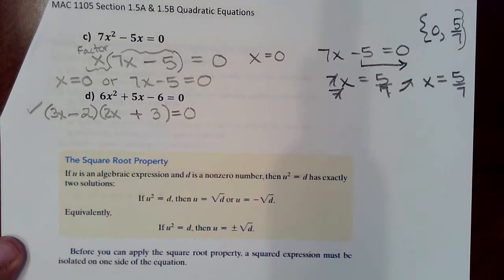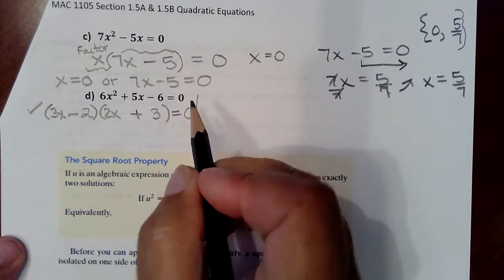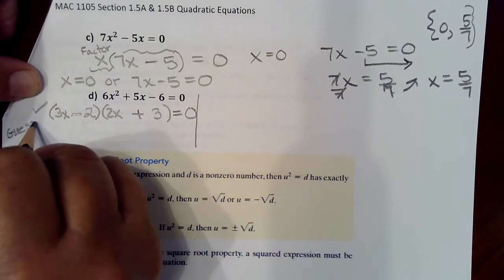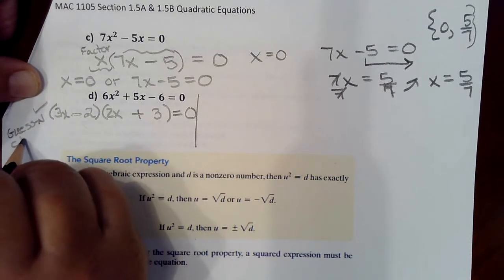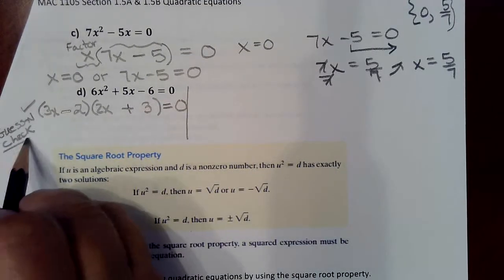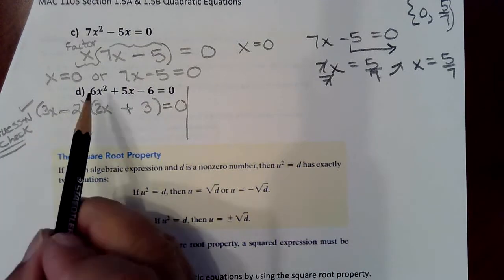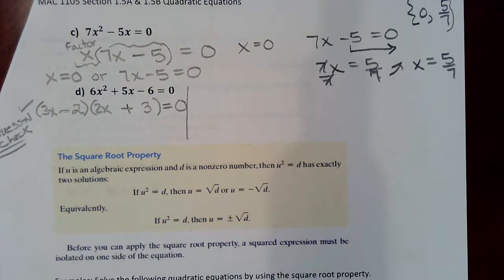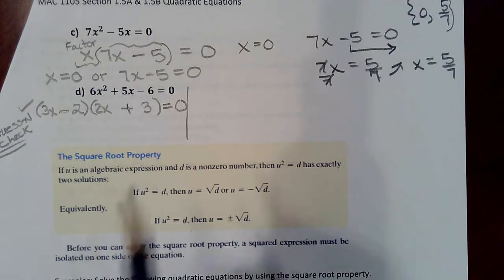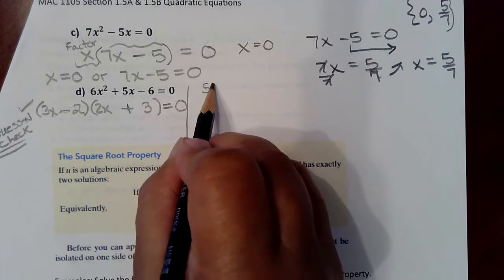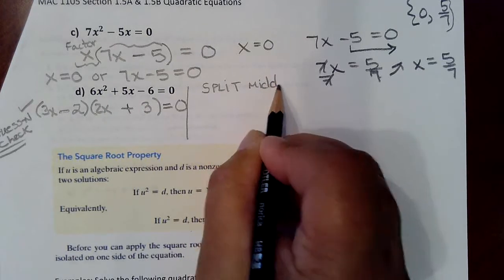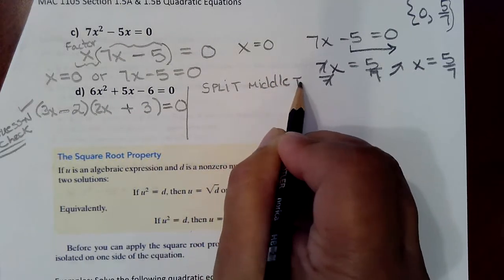If you decide that you like splitting the middle term, I'll demonstrate that way also because both of them are going to get you the same two factors. So this was guess and check where I was guessing at how to split this up to put in the front two positions and how to split the negative 6 up to put in the back two positions. If you're doing splitting the middle term, then the process would start like this.